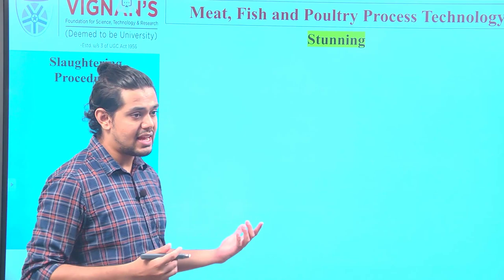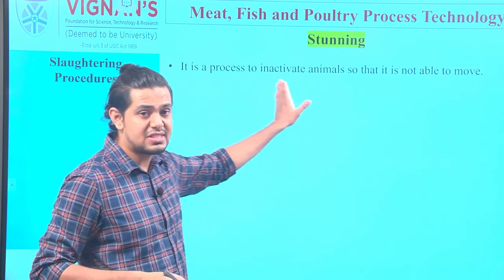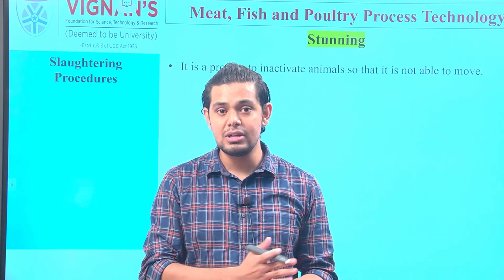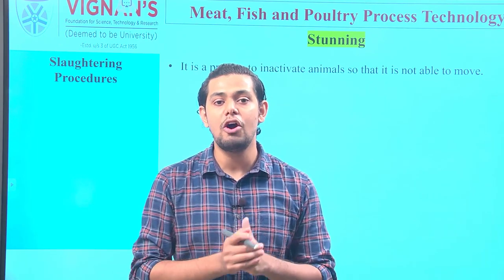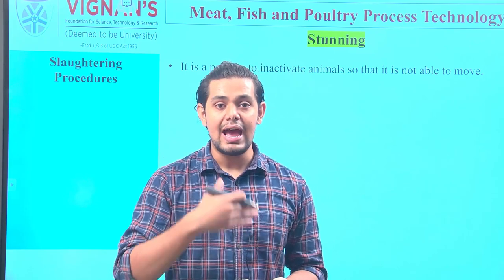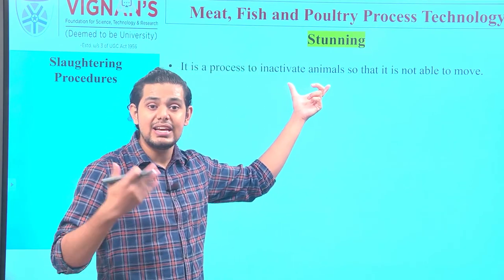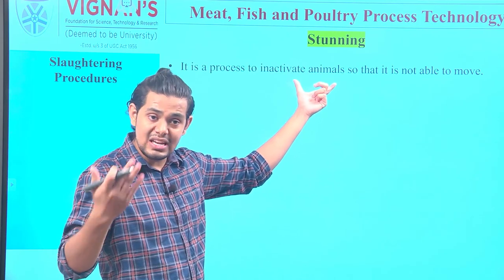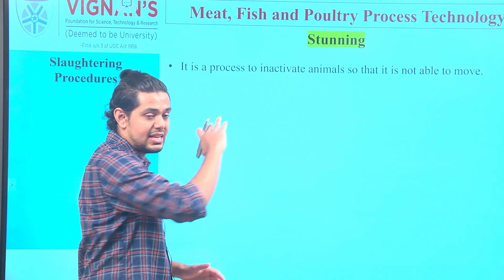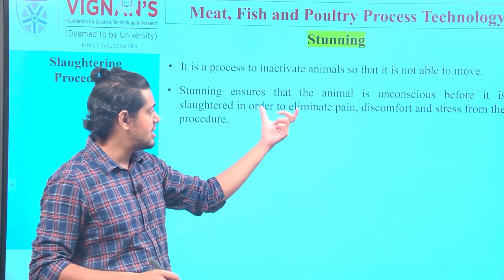Let us now understand what exactly the stunning process means. Stunning is a process of inactivation of animals so that they will not be able to move. When we inactivate an animal, the function of the brain is stopped — it will be under a halt — and in turn the animal will not experience any kind of pain or discomfort. This then facilitates moving forward with the slaughtering protocol.